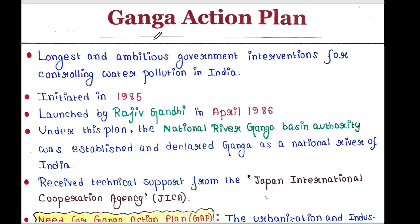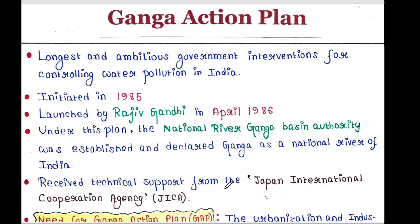Ganga Action Plan was the longest and most ambitious government intervention for controlling water pollution in India. It was initiated in 1985 and launched by Rajiv Gandhi in April 1986. Under this plan, the National River Ganga Basin Authority was established and Ganga was declared a national river of India.